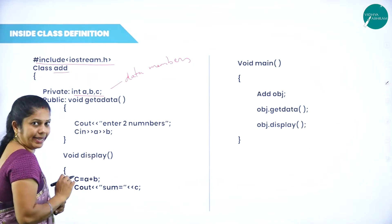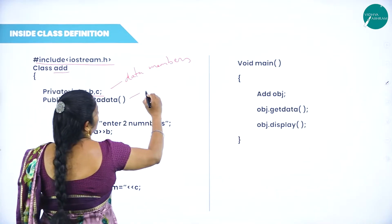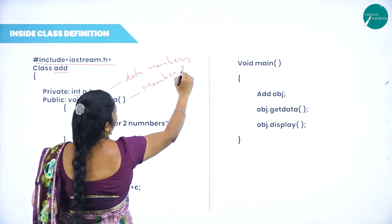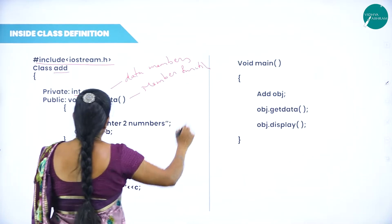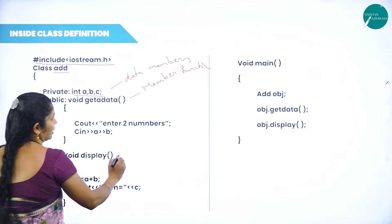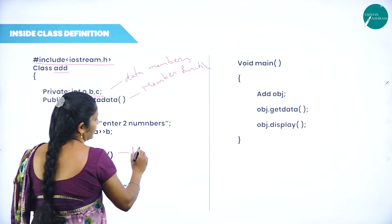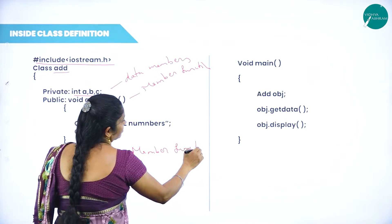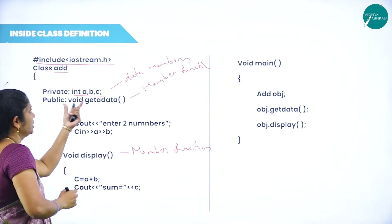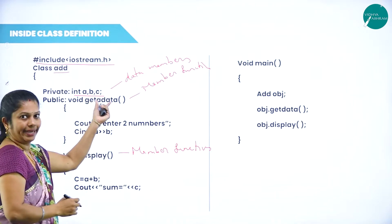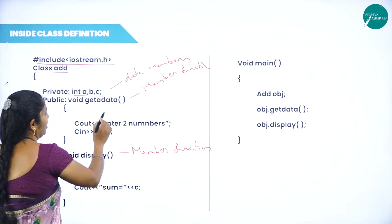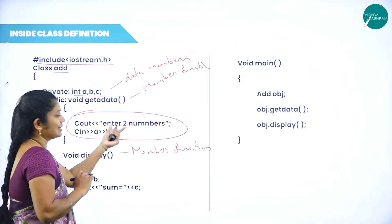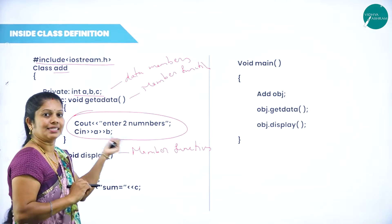In the private section, we are declaring the variable int a, b, c — these are the data members. Then void get_data is a member function, and void display is also one of the member functions. If you observe this, for get_data, I have written the statements inside the class itself — the statements are written inside the class only.